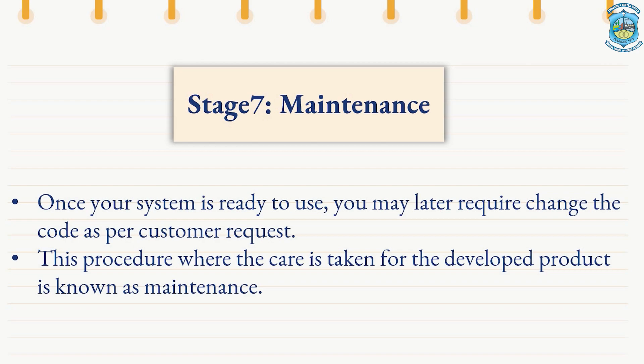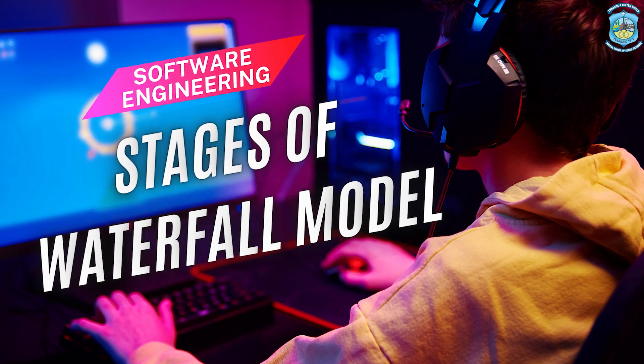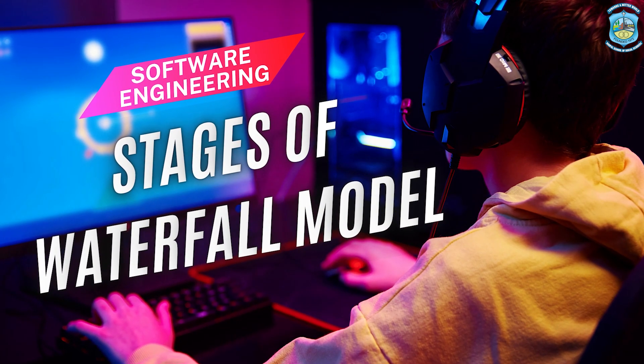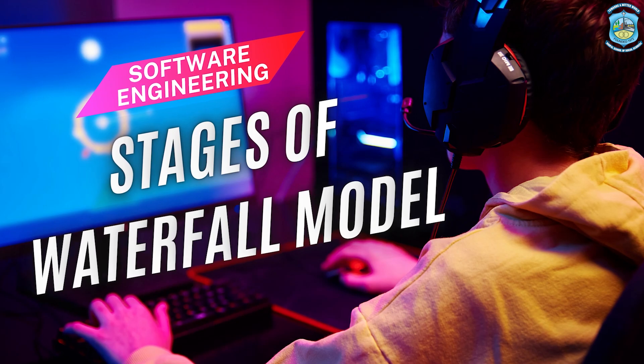The last stage of the waterfall model is the maintenance phase. Once the system is ready to use, the client may later require changes which have to be applied to the developed software. This is the phase where care is taken for the developed product. So now we have seen all the different stages of waterfall model.